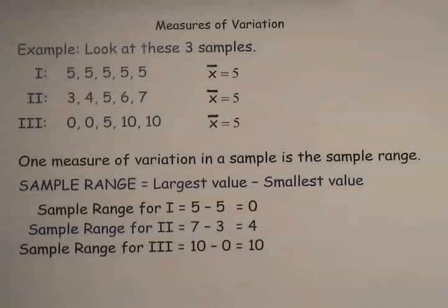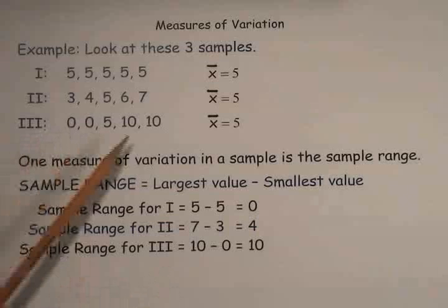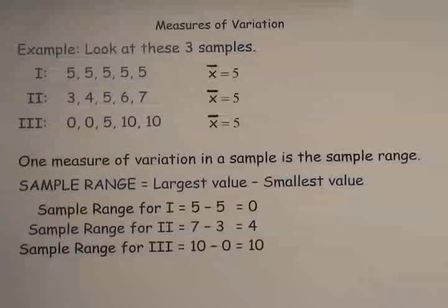The sample range is a very simple measure of variation in a set of numbers. There is a problem with the sample range, though, in that it doesn't tell you anything about the numbers in between. You're simply looking at the smallest and largest values. It doesn't tell you about the clustering of the values in between. So there is another measure of variation more commonly used for statistical purposes than the sample range.